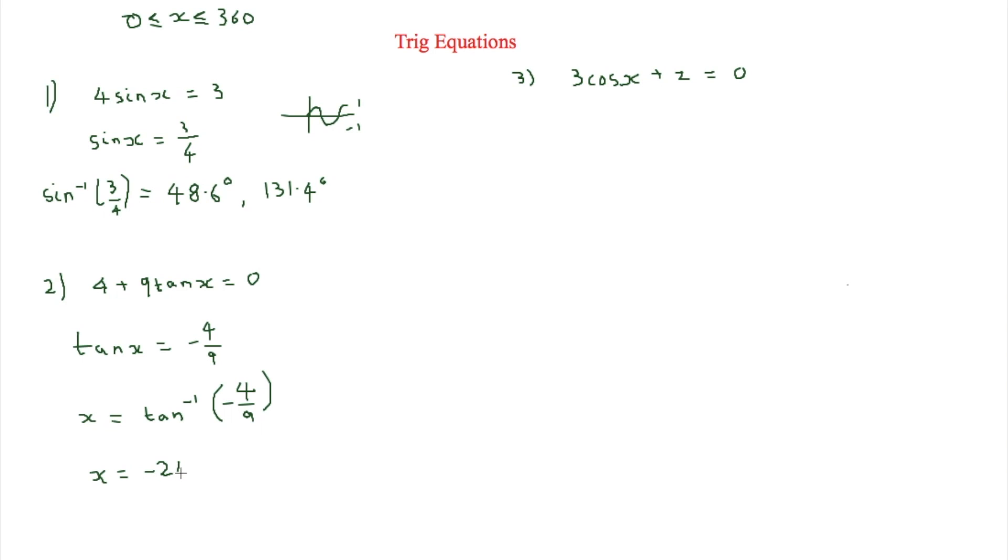However, we know this is out the range. So in order with tan, basically what you do is you add 180 each time. So it's the easiest one out of the 3. So minus 24 plus 180 is equal to 156. And then 156 plus 180 is equal to 336 degrees.